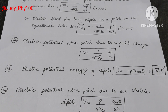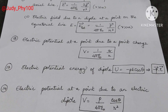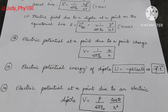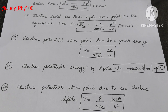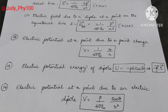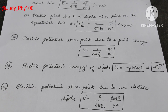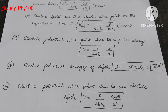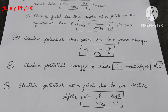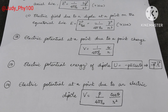Electric potential at a point due to an electric dipole: V is equal to p divided by 4 pi epsilon naught, multiplied by cos theta divided by r.